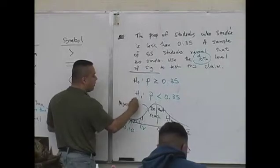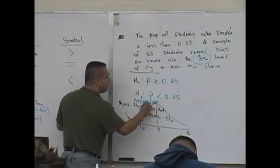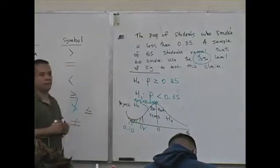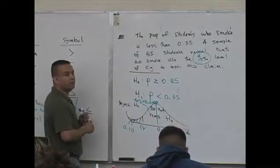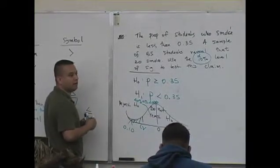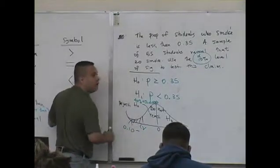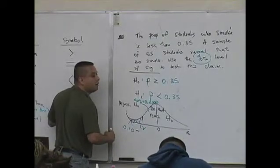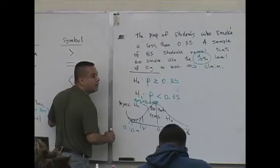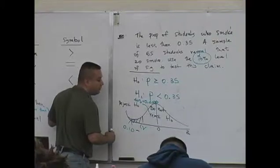Using your z-table, you're going to look for that 40 percent or simply 0.400, get as close as you can. What value is there? Is that the closest? Good. What's the z-value? Negative 1.28.